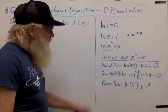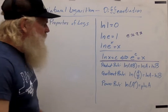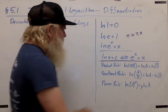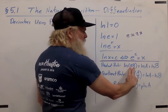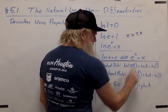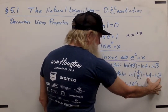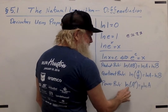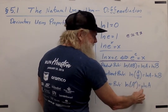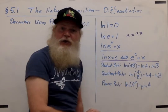And then we have the properties of logarithms which allow us to expand and contract logarithms. Those are the product rule, the quotient rule, and the power rule. The product rule says that log of a product is the sum of the logarithms. The power rule says that log of a to the p power is the same as p times log a — in other words, you can take that exponent and bring it down as a coefficient.